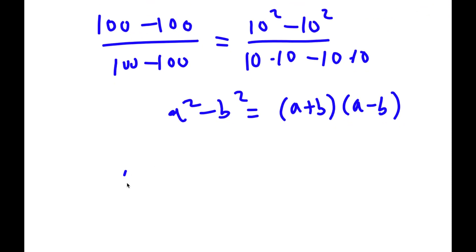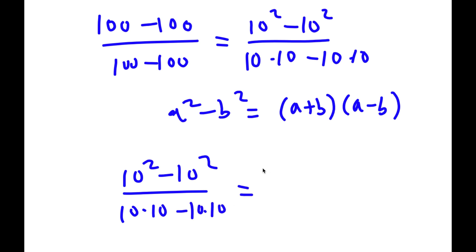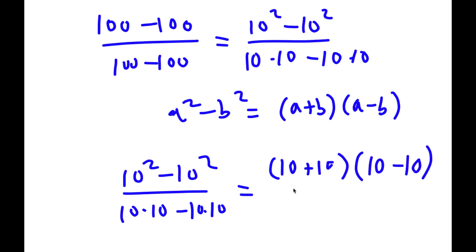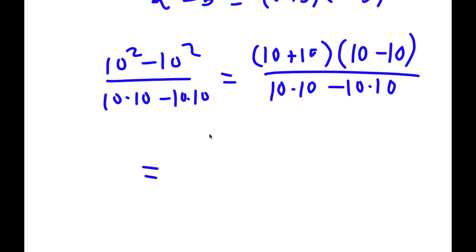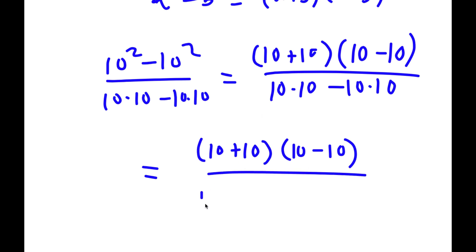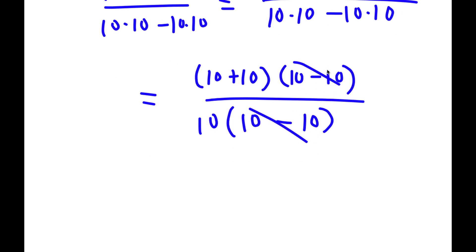So 10 squared minus 10 squared over 10 times 10 minus 10 times 10 is going to equal 10 plus 10 times 10 minus 10. And from the denominator, if I factor out 10, I get 10 times 10 minus 10. And now I'm simply going to cancel out these two 10 minus 10s.